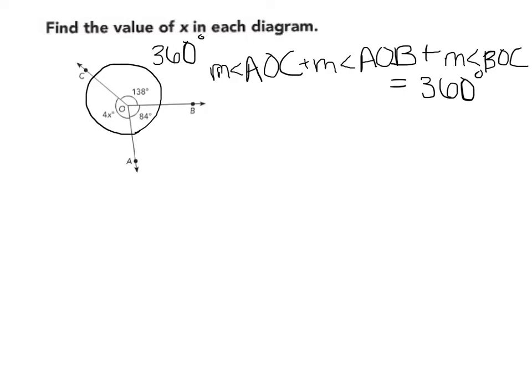So let's substitute what we know. The measure of angle AOC is 4x degrees. We know that the measure of angle AOB is 84 degrees. We know the measure of angle BOC is 138 degrees, and that all equals 360 degrees.